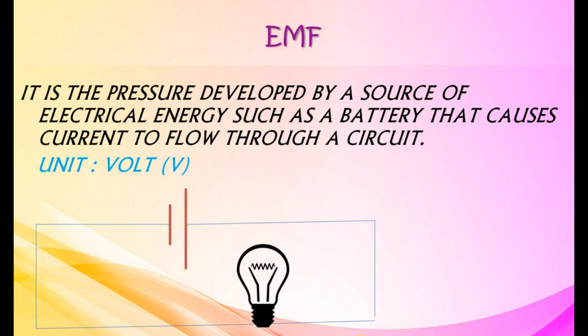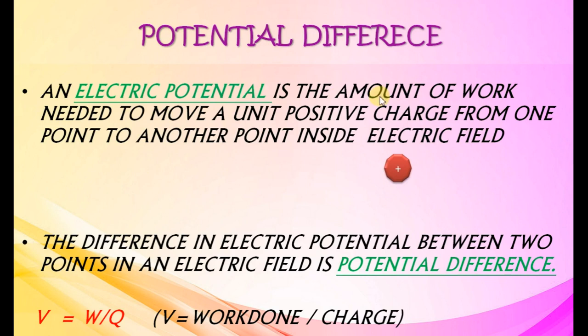EMF is the pressure developed by a source of electrical energy such as a battery that causes current to flow through a circuit. Unit is volt. Potential difference: an electric potential is the amount of work needed to move a unit positive charge from one point to another inside an electric field.